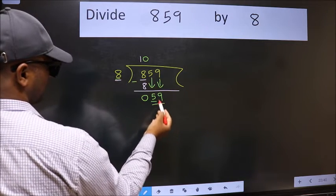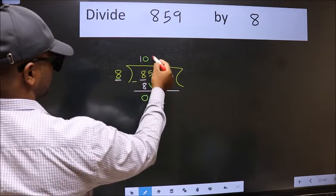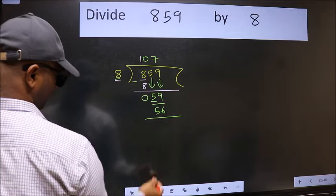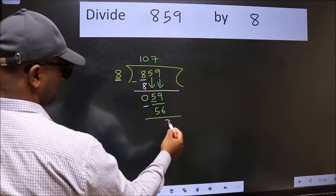Now we have 59. A number close to 59 in the 8 table is 8 times 7, which is 56. Now we subtract and get 3.